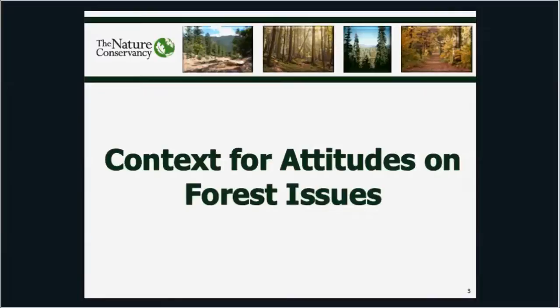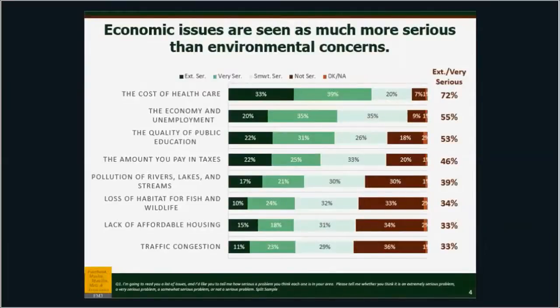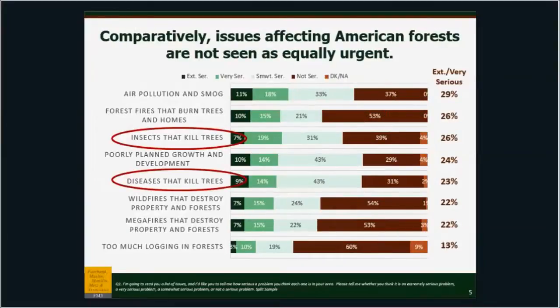First, let's do a little context. In general, the American public thinks that economic issues are a lot more serious and concerning than environmental concerns. The number one concern right now in America, believe it or not, is the cost of health care. When you get down closer to the bottom, you get to pollution, loss of habitat, etc. But then you have to go to page two of the issues, essentially, to reach the ones that are of most interest to the audience of this webinar — so insects that kill trees.